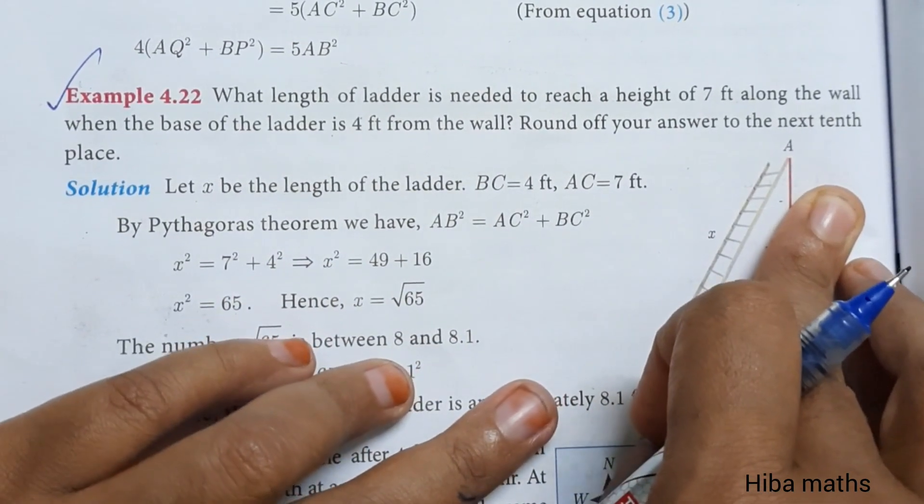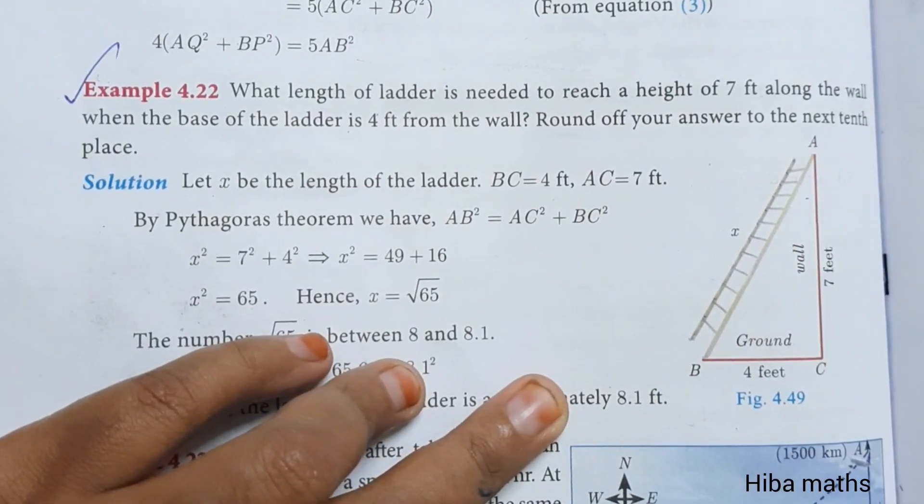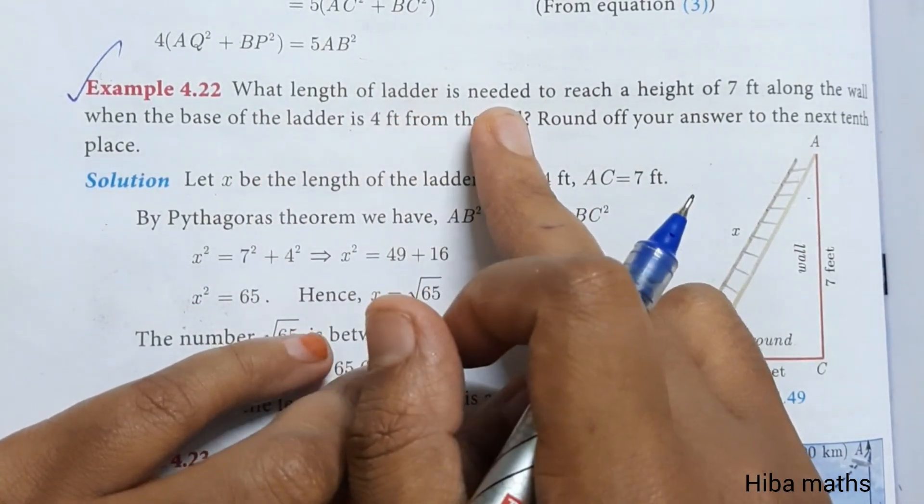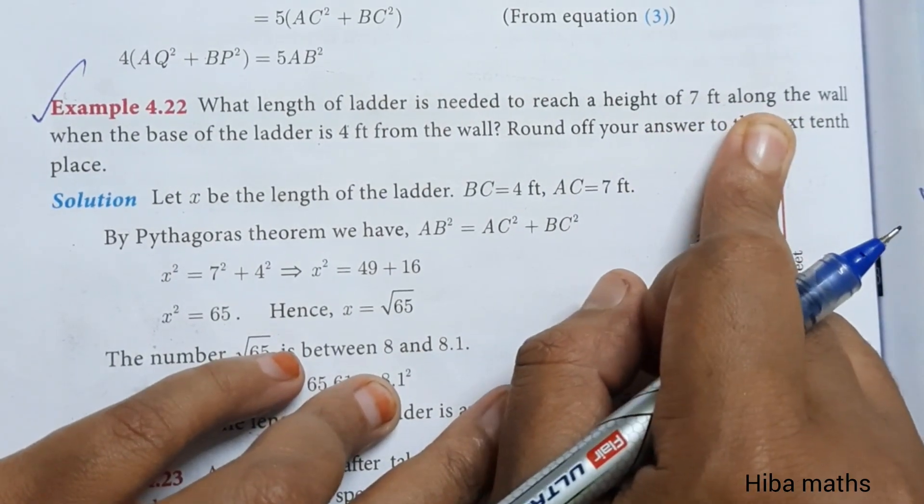Hello students, welcome to Hibamax. 10th Standard Math Chapter 4 Example 4.22: What length of ladder is needed to reach a height of 7 feet along the wall?